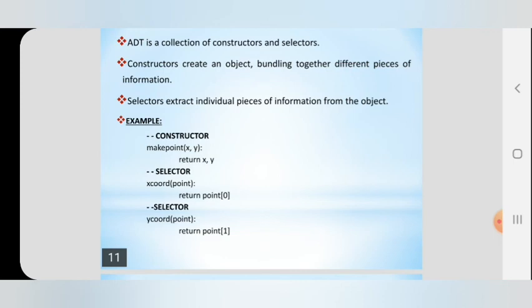The constructor and selector are explained with another example. make_point(x, y) is a function inside the abstract data type — it is called the constructor. The constructor returns the values of x and y. To get the x value, we use x_of_point, which returns point[0]. To get the y value, we use y_of_point, which returns point[1]. These selector functions are used for retrieving values from the abstract data type.